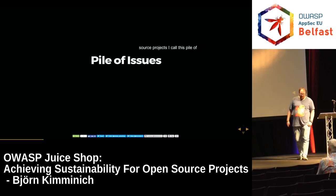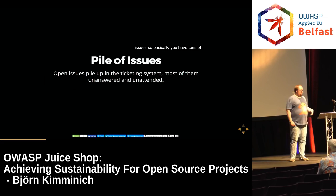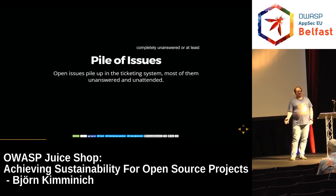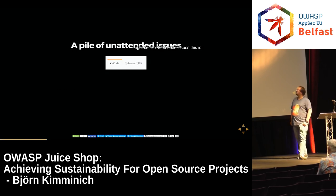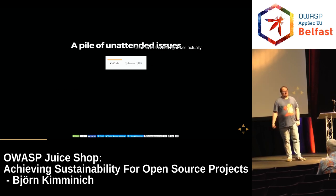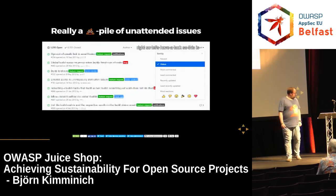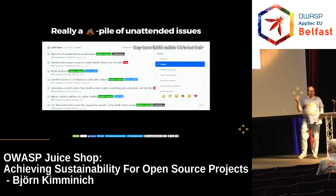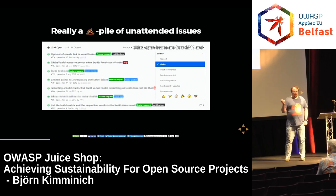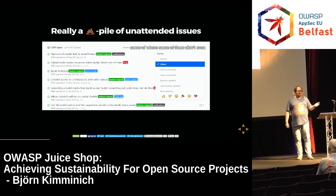Another anti-pattern I find in many open source projects I call the 'pile of issues.' You have tons of open issues in your repository — let's say GitHub — and most are completely unanswered or unattended. It might look like 1,295 open issues. That might be okay if there are 500,000 closed issues, but when the oldest open issues are from 2011 and some are labeled as bugs with six-year-old reports that never got a comment from the development team — they were just opened and never touched — that's really bad.